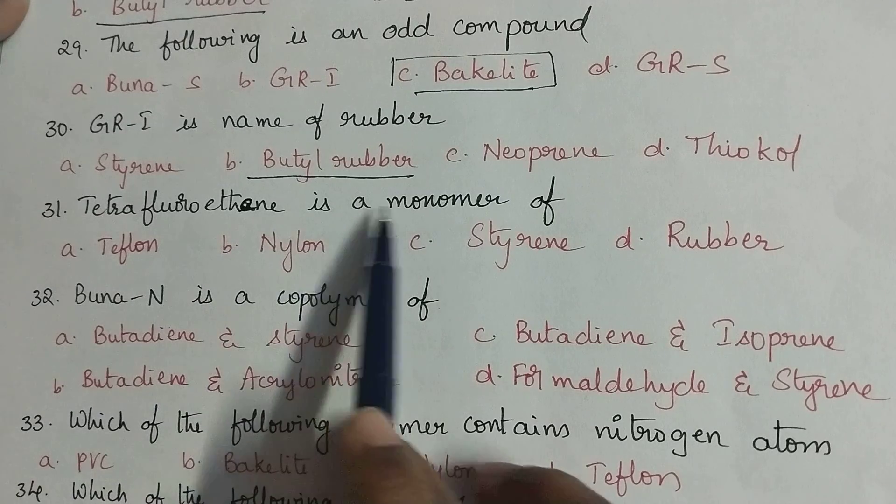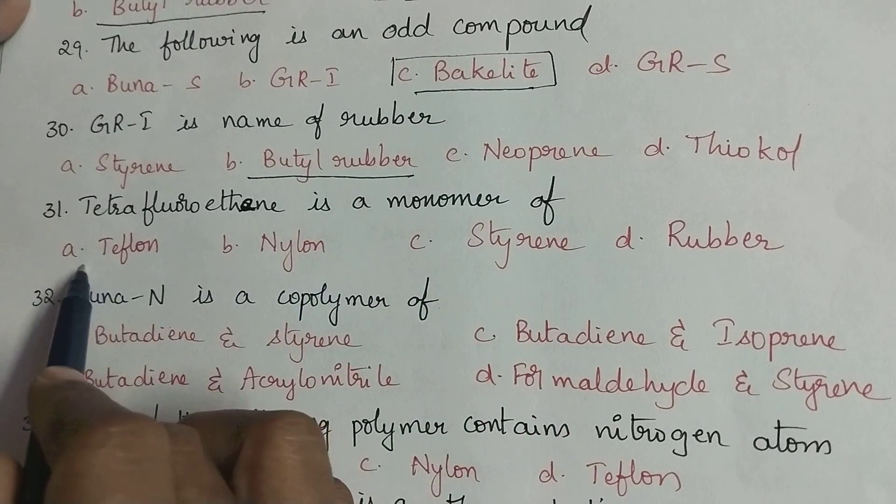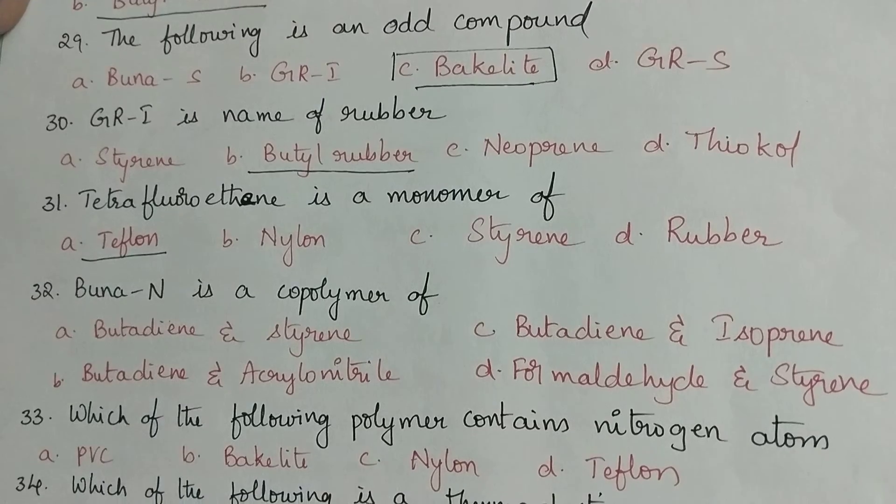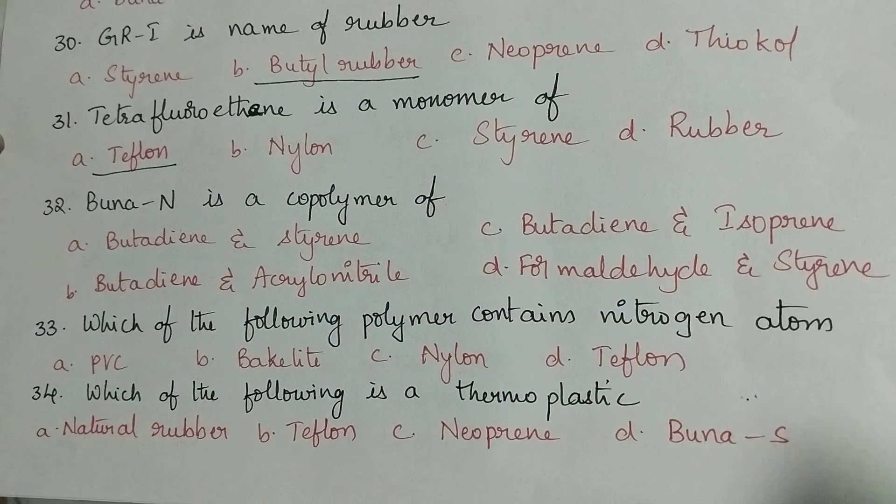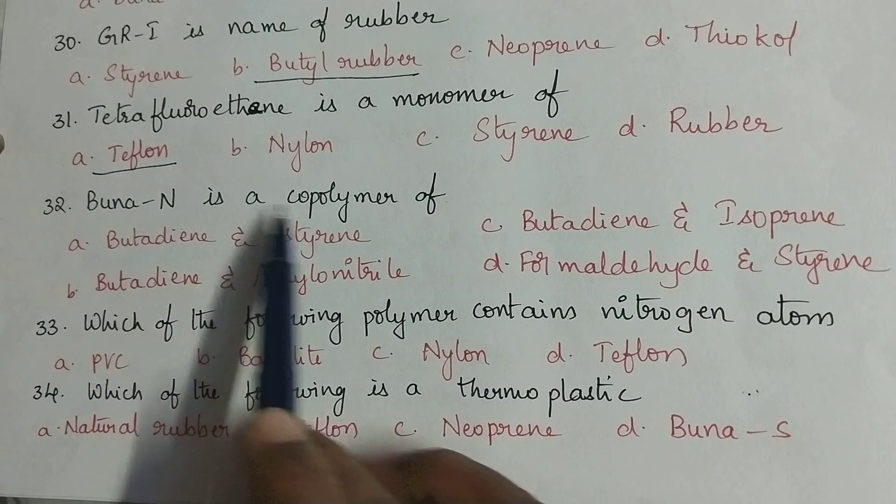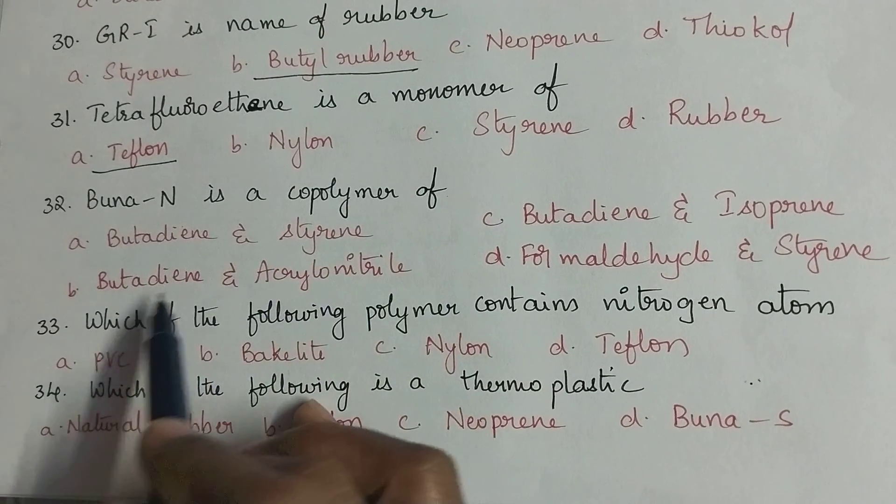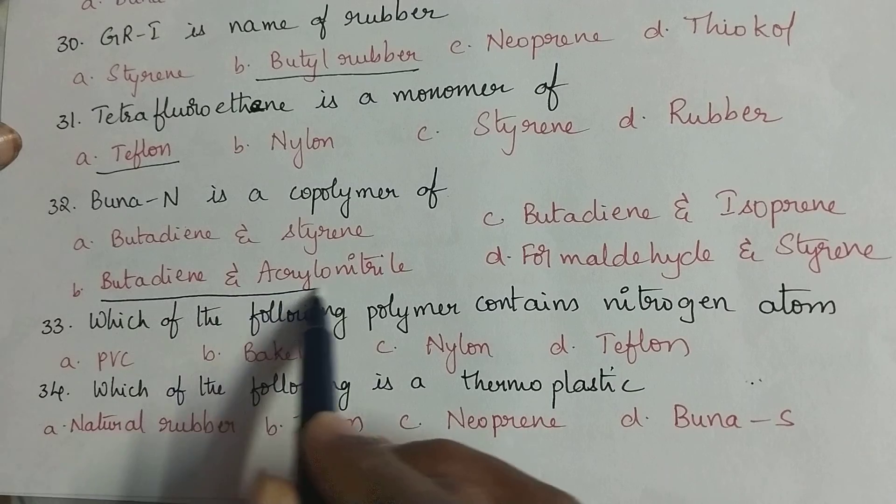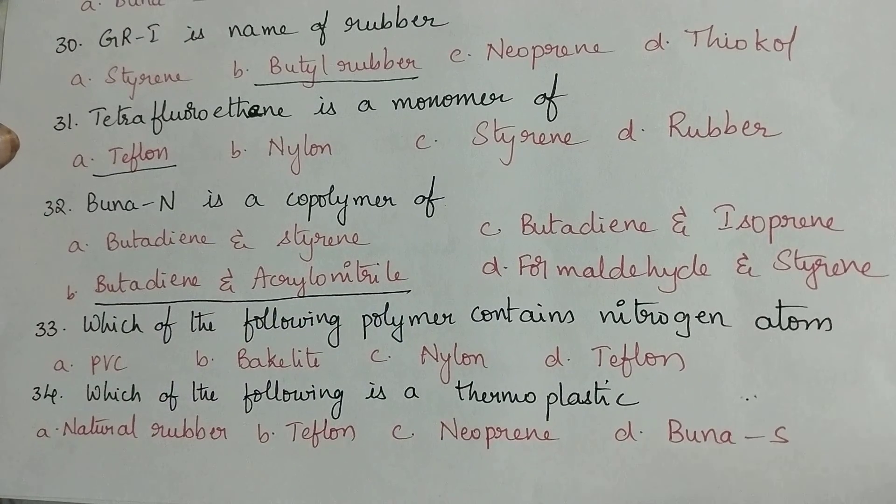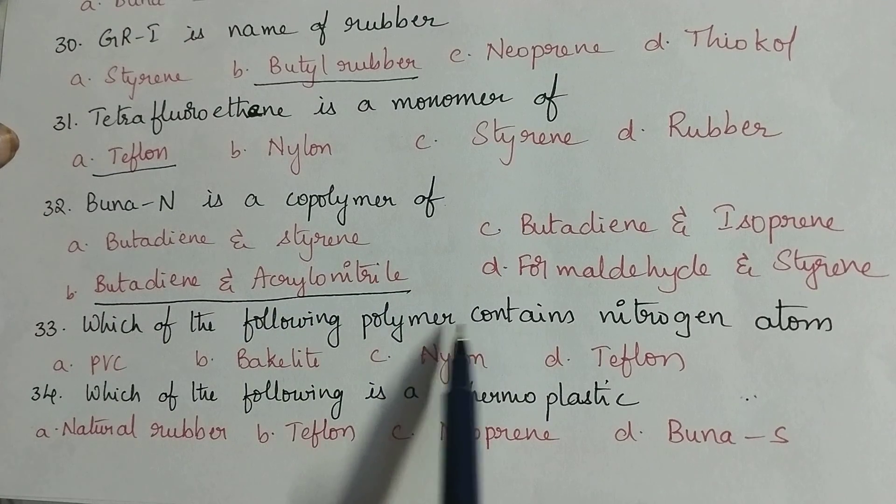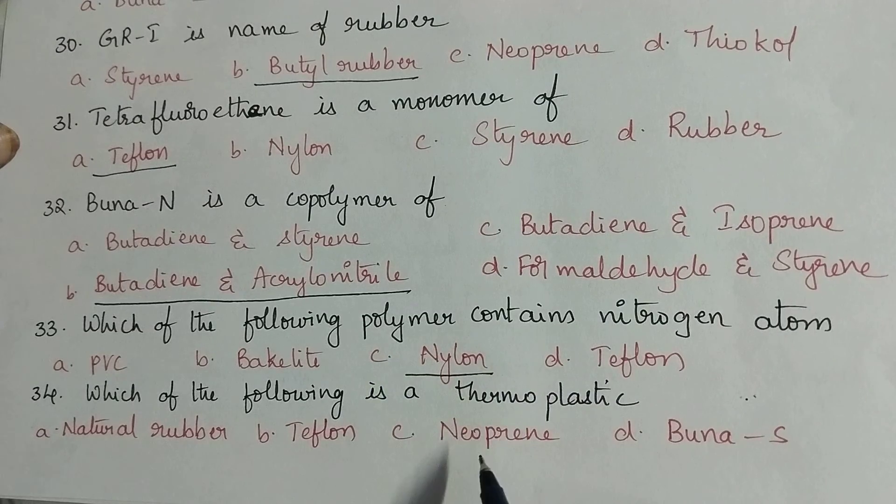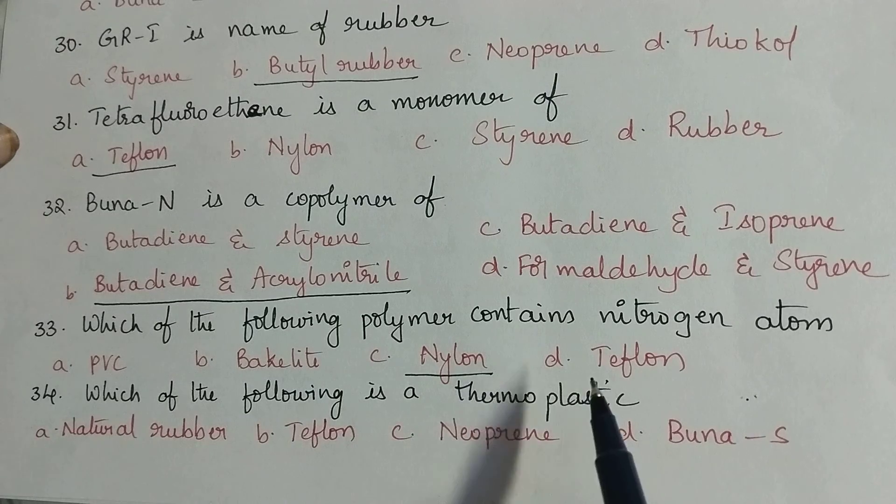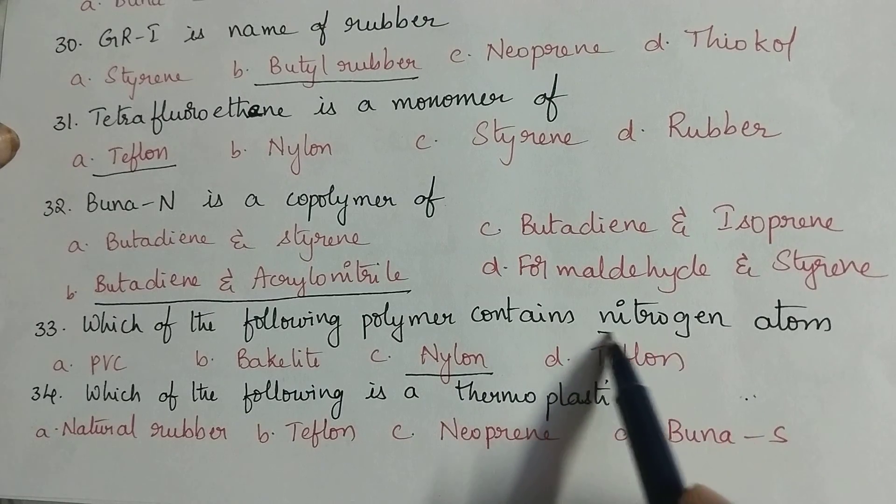Tetrafluoroethylene is a monomer of Teflon. Buna-N is a copolymer of butadiene and acrylonitrile. Which of the following polymer contains nitrogen atom? Nylon 6 is also called as polyamide polymer. It contains nitrogen polymer, it contains nitrogen atom.